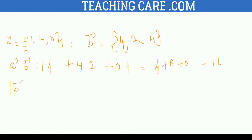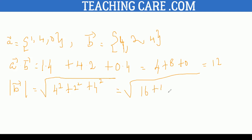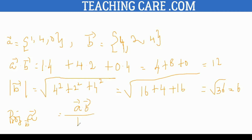Now I calculate the magnitude of B vector. That is the square root of 4² plus 2² plus 4², which is square root of 16 plus 4 plus 16, that is square root of 36, which equals 6. Now I calculate the vector projection of A over B: that is A dot B divided by |B|² times B vector, which is 12 over 36 times B vector (4, 2, 4). This is the difference when you have three-component vectors instead of two.